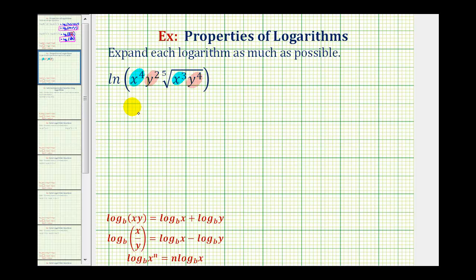We can write this as natural log, leave x to the fourth and y to the second alone for right now. But then the fifth root of x to the third is the same as x to the three-fifths power, and the fifth root of y to the fourth is the same as y to the four-fifths power.